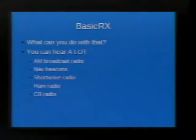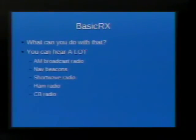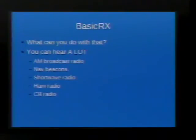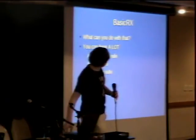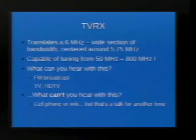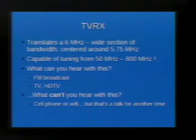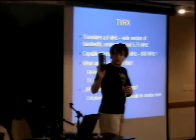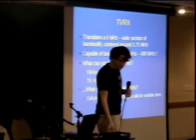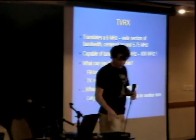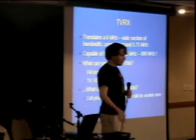That sounds kind of boring, but what can you do with it? It turns out there's a lot going on under 32 MHz: AM broadcast radio, nav beacons, shortwave radio from all around the world, ham radio, CB radio — all under 32 MHz. If we get a little fancier, we have the TVRX card. That's the prebuilt RF front end that goes into a cable TV or antenna tuner — just a little module that someone manufactures. The guy who designed this card just put that on there.